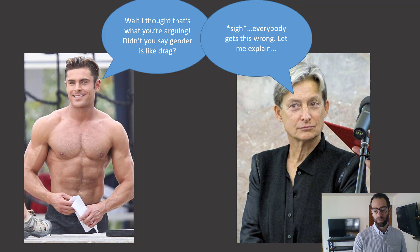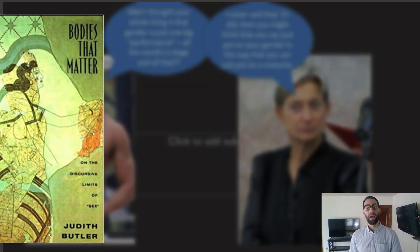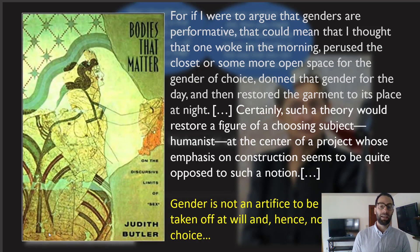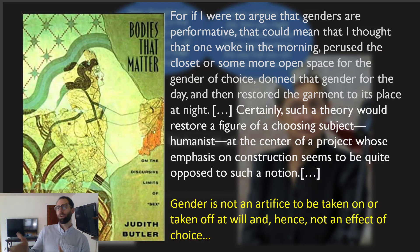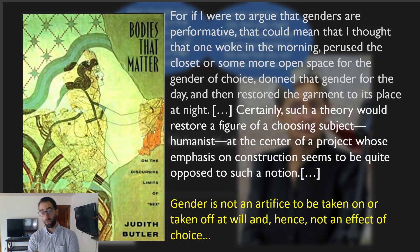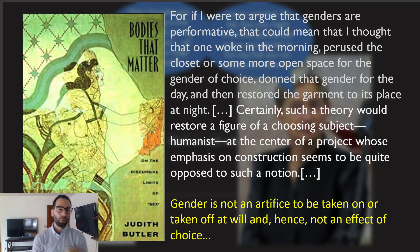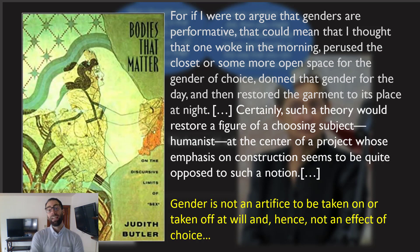In 1993, Butler wrote a different book called Bodies That Matter, in which the preface has some clarification of Butler's actual point in their previous book, the famous 1990 Gender Trouble. This is what they say: 'For if I were to argue that genders are performative, that could mean that I thought that one woke in the morning, perused the closet or some more open space for the gender of choice, donned that gender for the day, and then restored the garment to its place at night. Certainly, such a theory would restore a figure of a choosing subject, humanist, at the center of a project whose emphasis on construction seems to be quite opposed to such a notion. Gender is not an artifice to be taken on or taken off at will, and hence, not an effect of choice.'